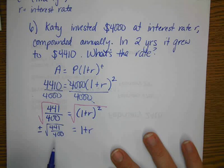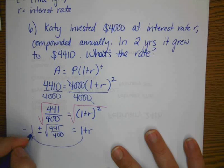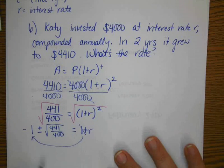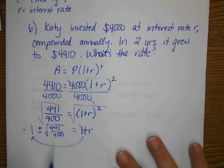And now we can just subtract the 1 over. So, I'm just going to move that right there. And now it's gone. So, our rate is negative 1 plus square root, plus or minus square root of 441 over 400.